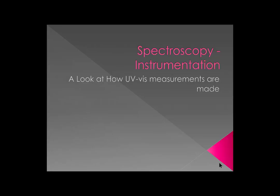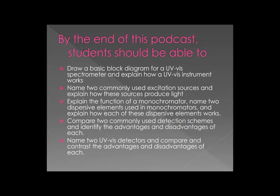In this podcast today we're going to discuss how a UV-visible spectrometer actually works. By the end of the podcast, students should be able to draw a block diagram for a UV-Vis spectrometer and explain how the instrument works; name two commonly used excitation sources and explain how these sources produce UV-visible light; explain the function of a monochromator; name two dispersive elements used in monochromators and show how each works; compare two commonly used detection schemes with their advantages and disadvantages; and name two UV-Vis detectors and compare and contrast their advantages and disadvantages.